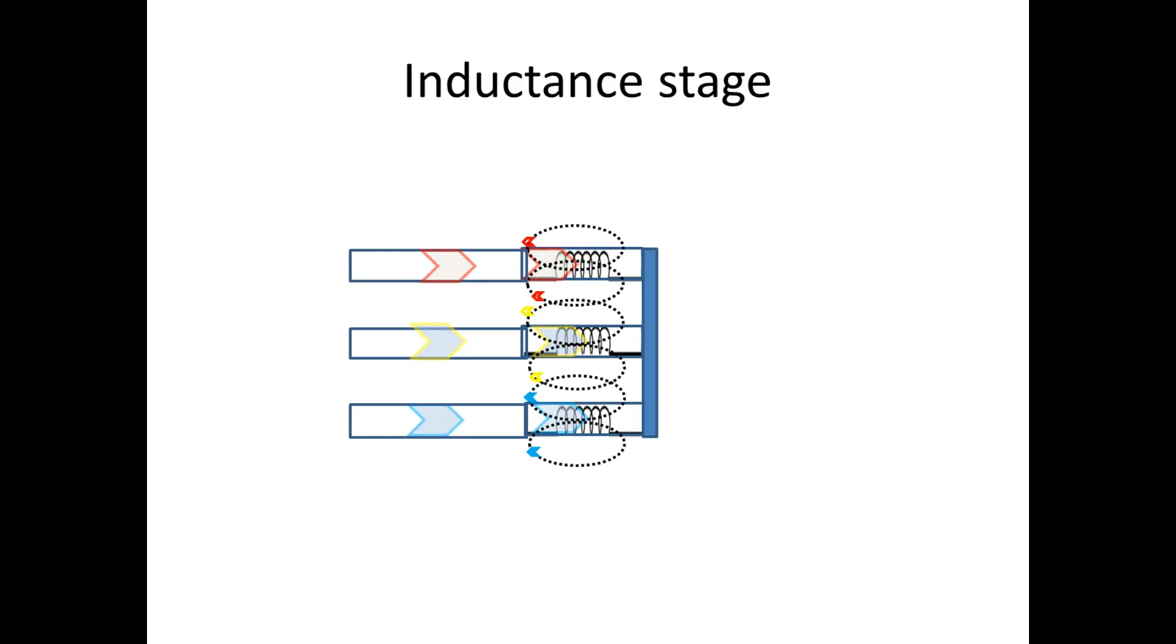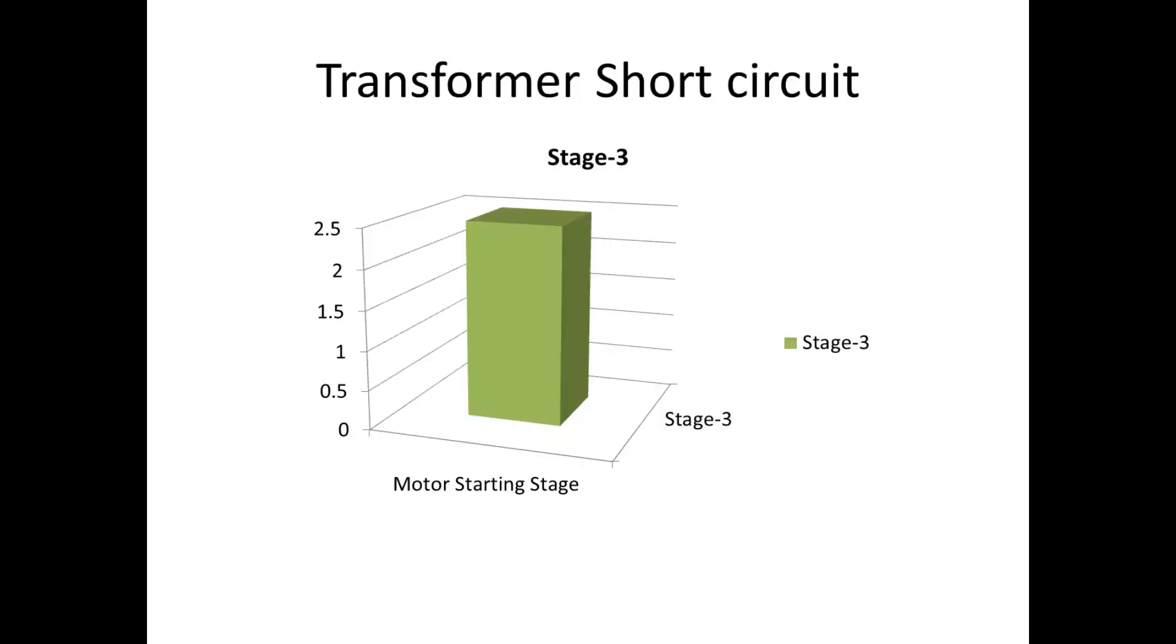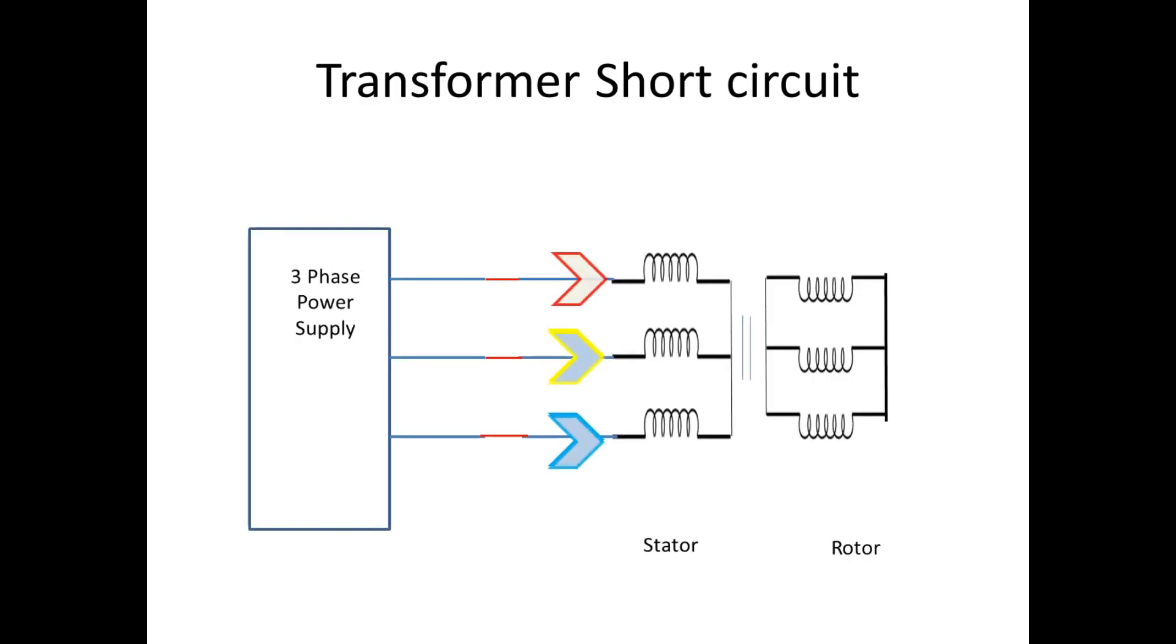Now we can see stage 3. Due to this inductance formed on the stator, this inductance makes the mutual inductance with rotor. By the mutual inductance, rotor produces EMF, just like a transformer.